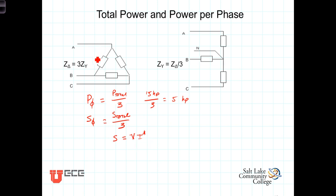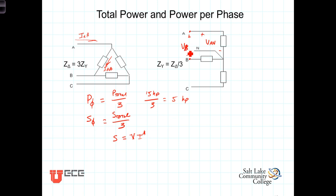We know that in a delta connected load, line voltages and phase voltages happen to be the same value, and we have line currents I sub aA and phase currents I sub aB. In a Y connected load, on the other hand, we have a phase voltage V_an — the voltage across the phase — which is different from the line voltage V_AB, the voltage between two lines. For completeness, the current through the phase equals the line current I sub aA in a Y connected load.